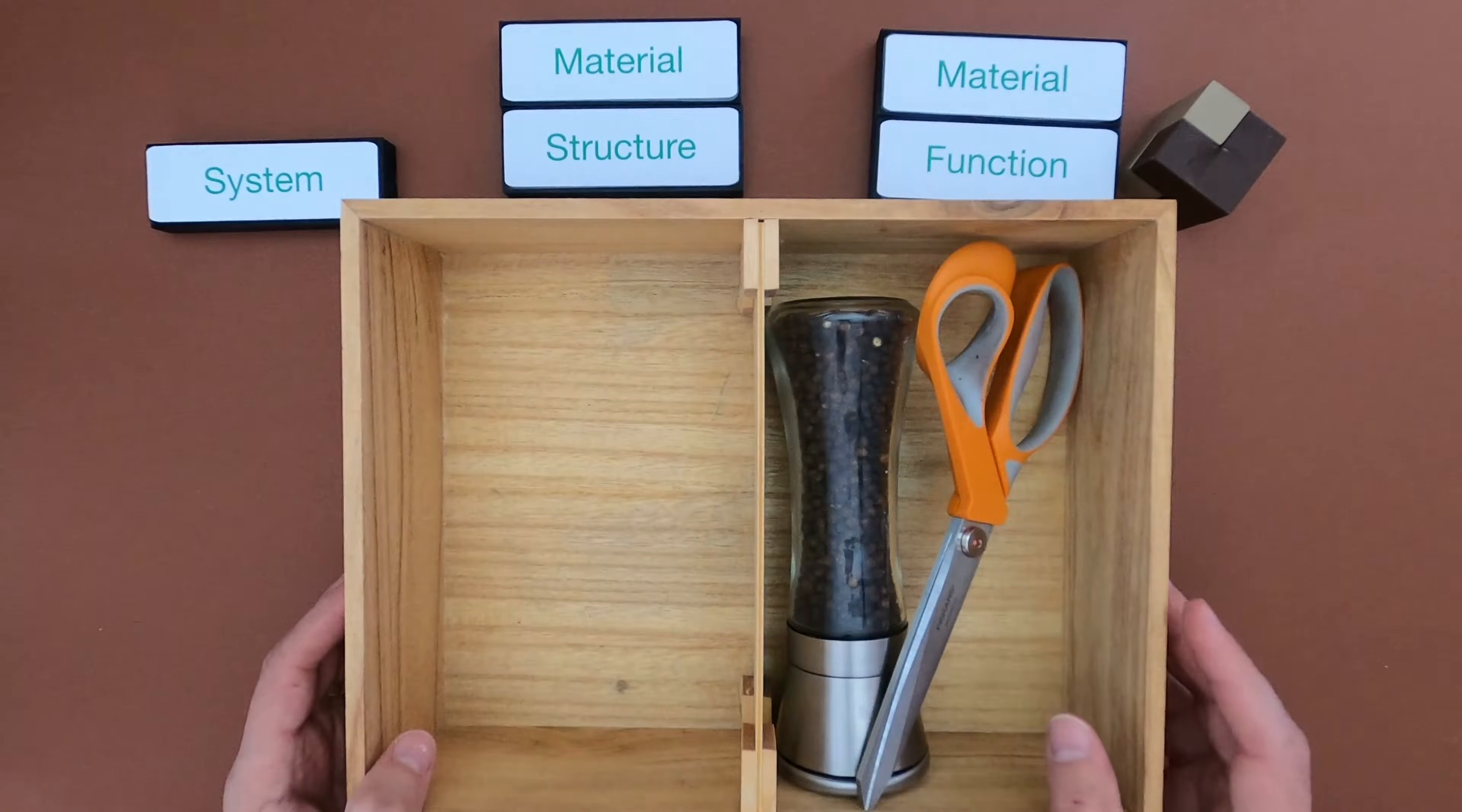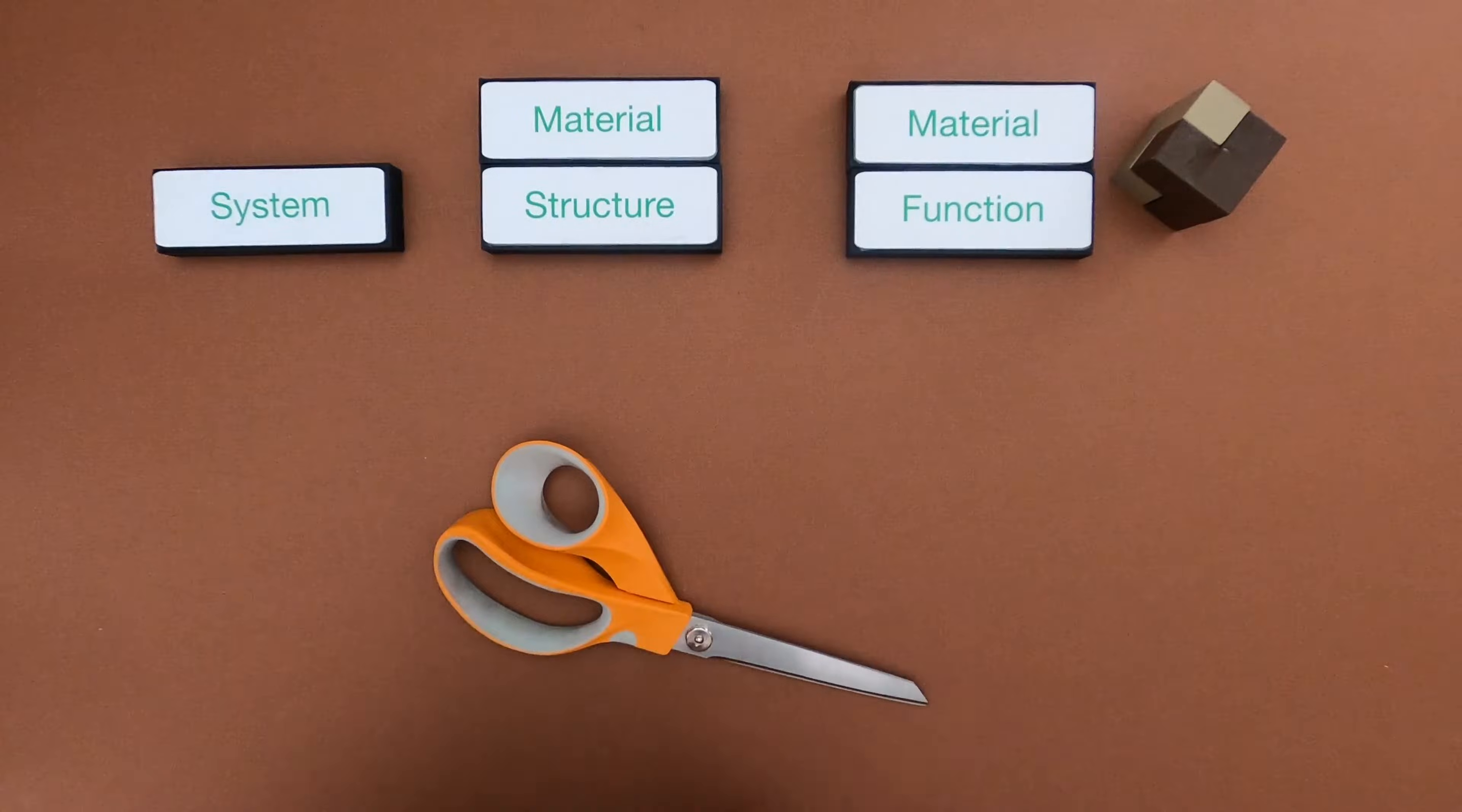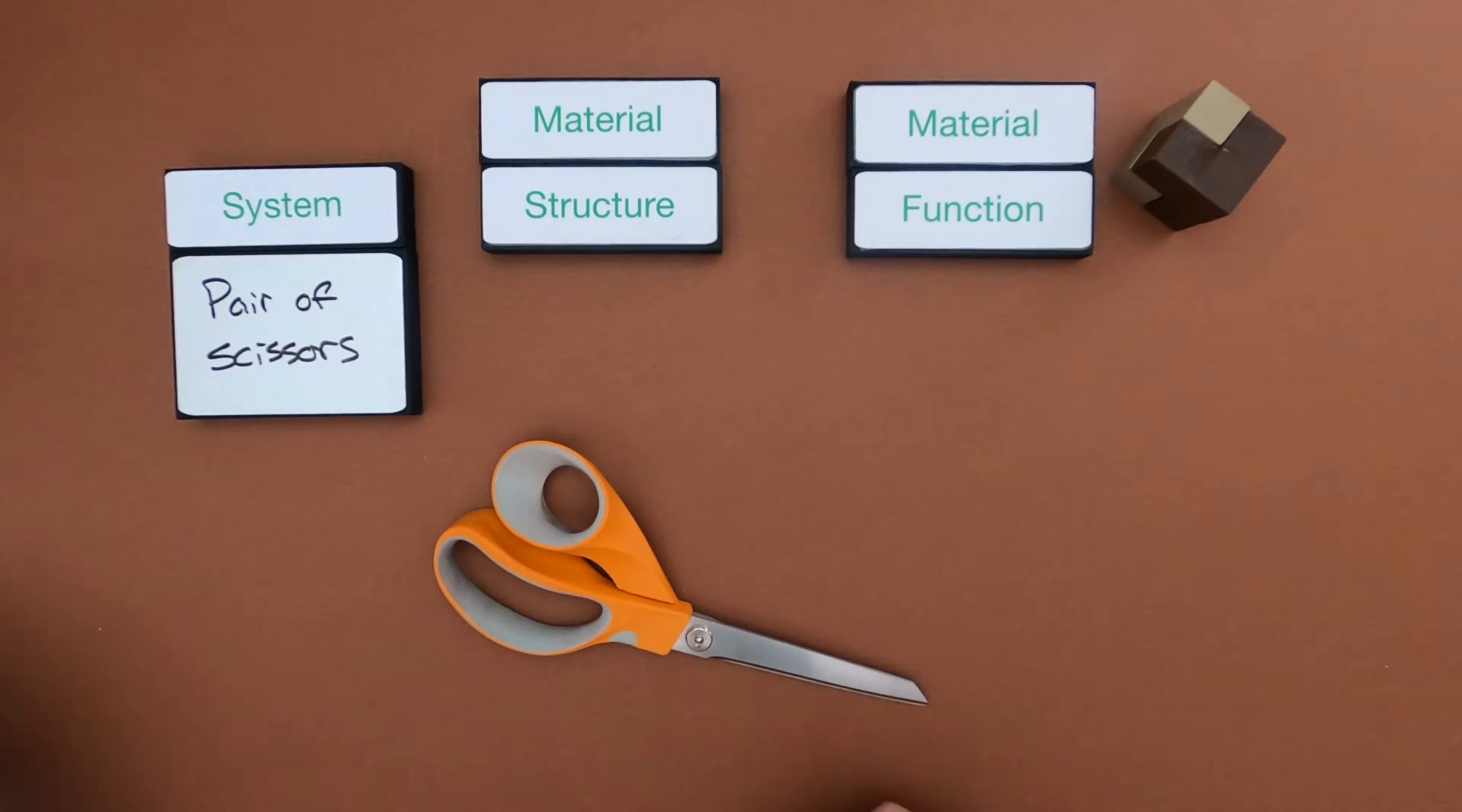So I'm going to get the scissors out and we're going to take a look at that. As always, the first thing you want to do is identify the system that you're going to be investigating. So we're going to investigate this pair of scissors right here.